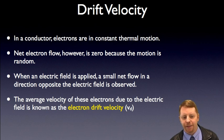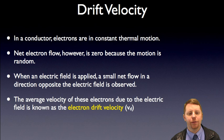However, when you apply an electric field, you get a small net flow of electrons in the direction opposite the electric field. So you get a small positive current flow in the direction of the electric field. You still have all this thermal random motion going on, but you get some small amount of average electron flow in a direction opposite the electric field. We call this average electron velocity the drift velocity, v_d.